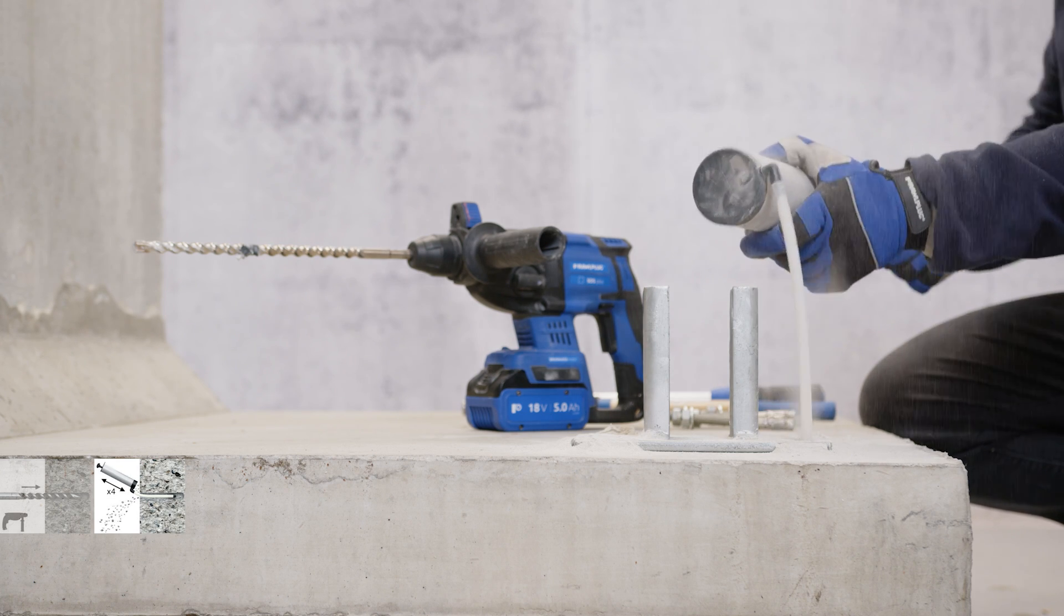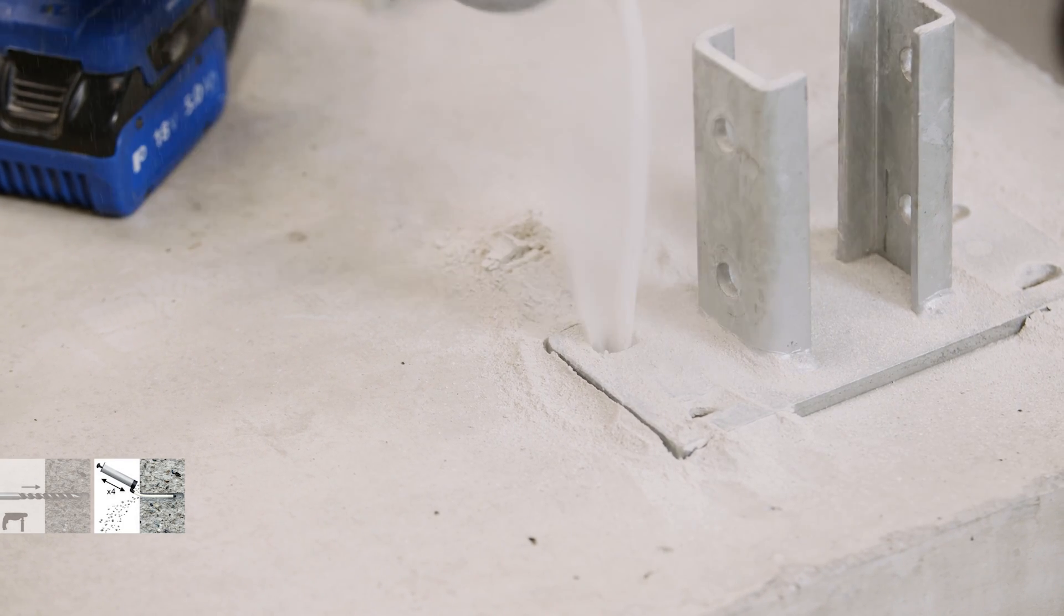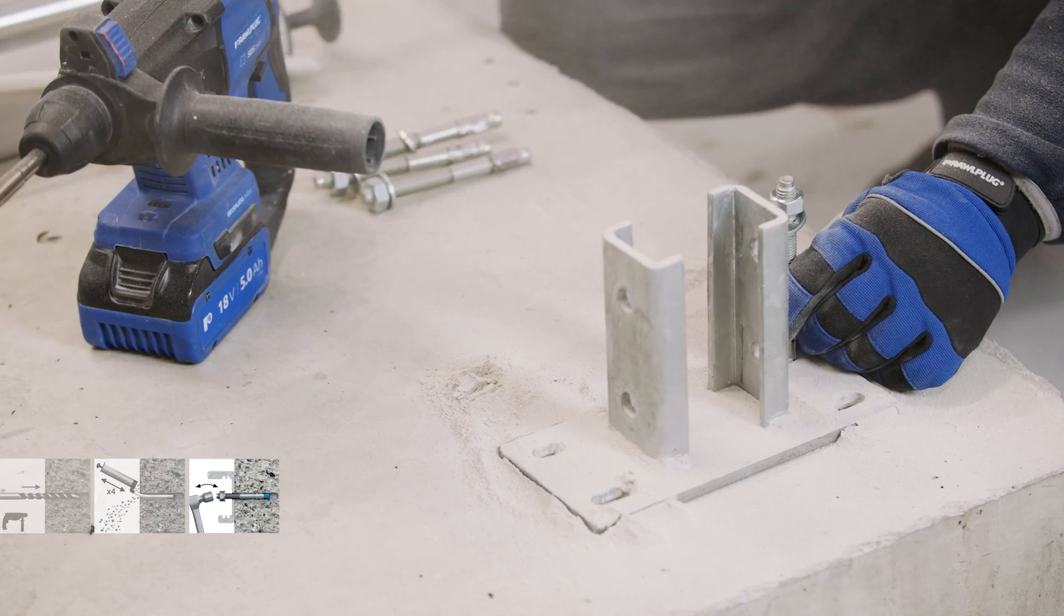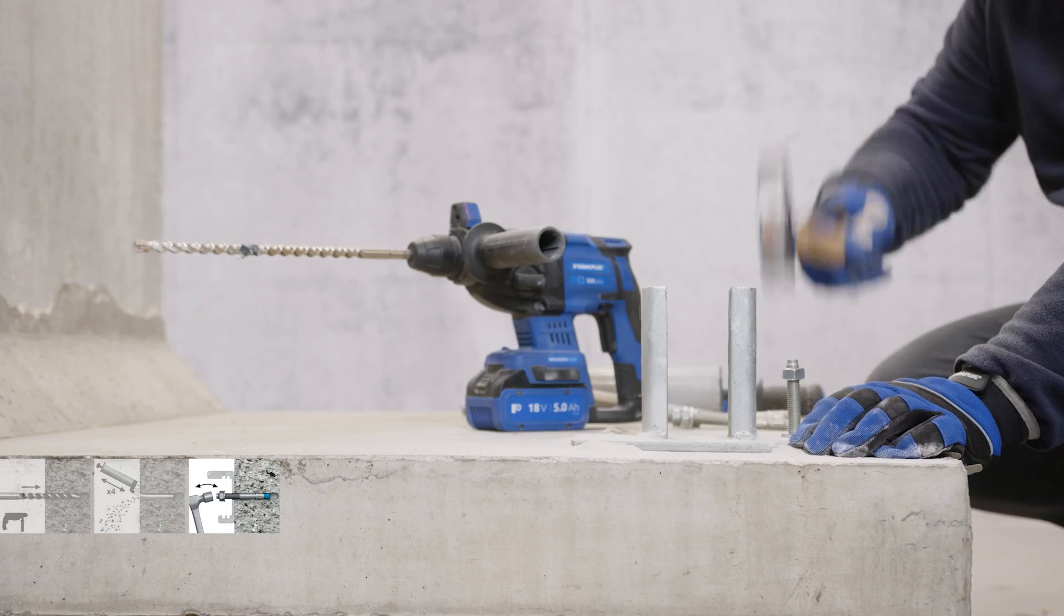Clean the hole using an air pump four times. Place the through bolt in the hole and hammer it to the required depth.